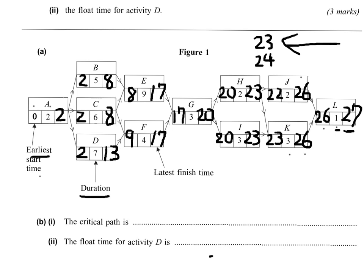So let's check. Starting from I, you should have 23. And for G, 23 take away 2 is 21 going this way, and 23 take away 3 is 20 going this way. So you're going to have to choose the smaller one, 20.